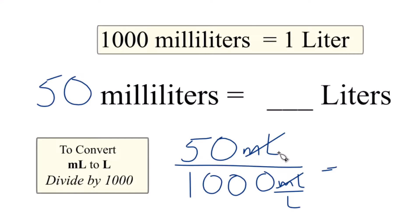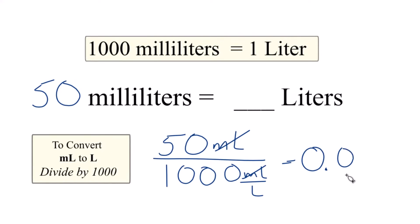And 50 divided by 1,000 is 0.05. The units are liters. So in answer to our question, 50 milliliters equals 0.05 liters.